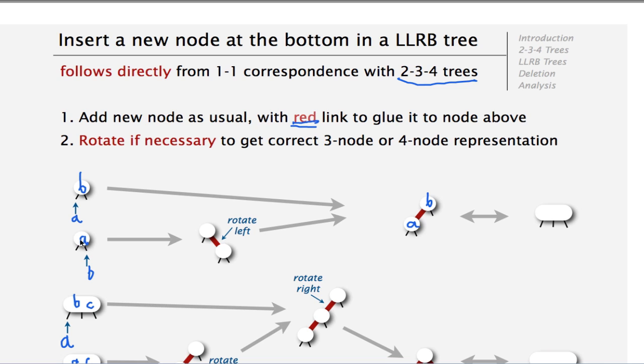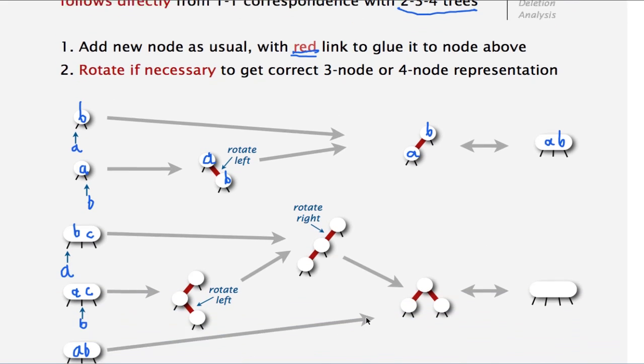If we have an A node here and we add the element B, so now we have a red edge going to the right, which we don't allow. So we do a rotation. And we end up with the same representation here, which is the same representation as this 3-node.